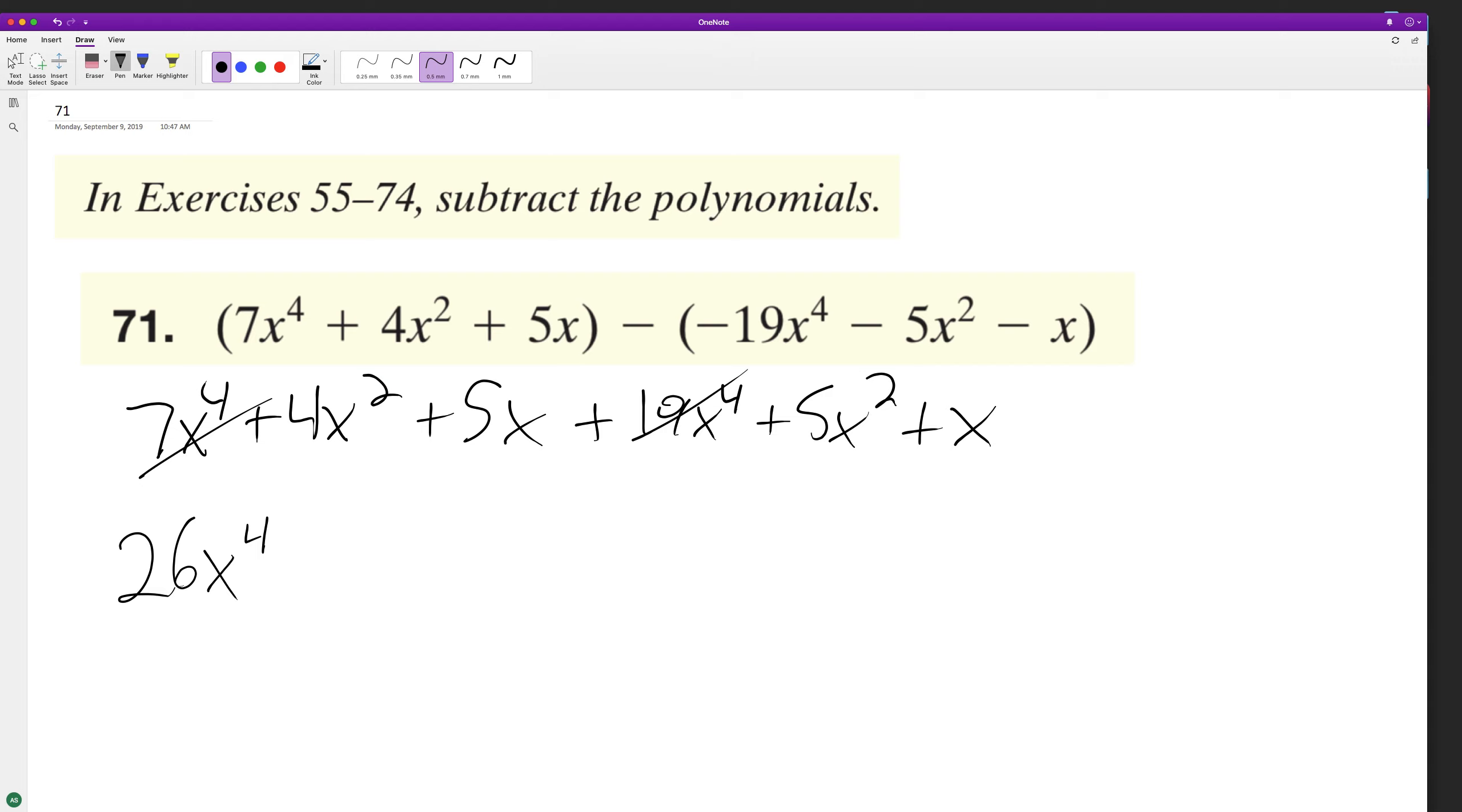Then 4x squared plus 5x squared is 9x squared, and then we'll have 5x plus x which is positive 6x. And that's it.